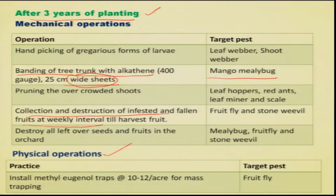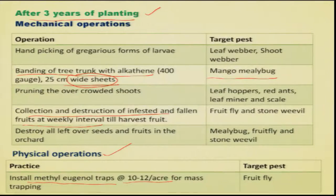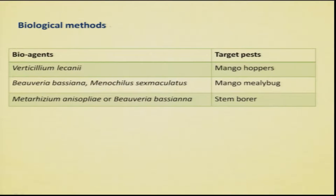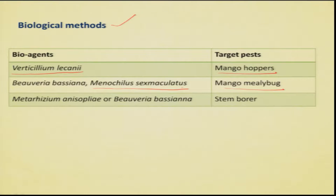During the fruit formation stage, installation of methyl eugenol traps at the rate of 10 to 12 per acre helps in mass trapping of fruit flies and reducing their population. For biological control, the fungal pathogen Verticillium lecanii can be applied against mango leaf hopper, and the lady bird beetle Menochilus sexmaculatus is effective against mango mealy bug. The fungal pathogen Beauveria bassiana is also found to be effective. In all cases, conservation of natural enemies through judicious use of pesticides is important.